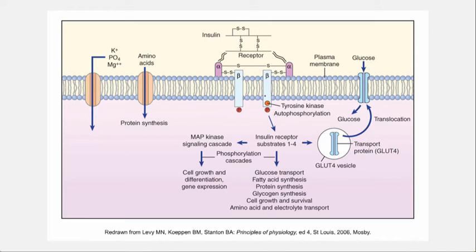What is it that happens? The insulin molecule hits the insulin receptor on the cells, and that does several things. One thing it does is allow glucose in, and when glucose goes in, it goes in through this GLUT4 protein — a glucose transport 4 protein that allows glucose to go from the extracellular fluid into the intracellular fluid through the membrane. It gets put into a GLUT4 vesicle, and then insulin receptor substrates can produce things like fatty acid synthesis, protein synthesis, glycogen synthesis, and cell membrane growth and survival.